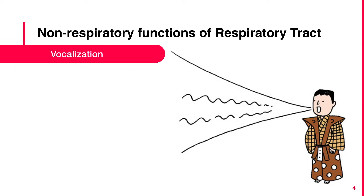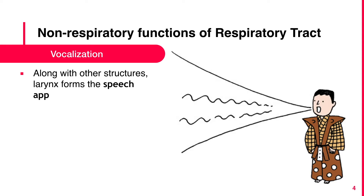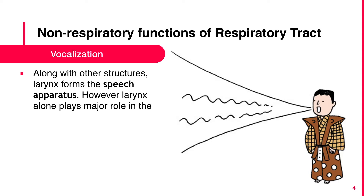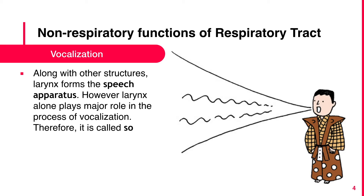Vocalization: Along with other structures, the larynx forms the speech apparatus. However, the larynx alone plays a major role in the process of vocalization. Therefore, it is called the sound box.